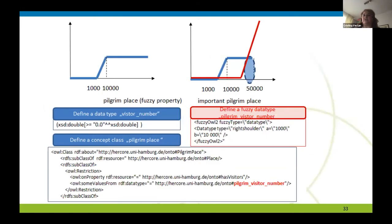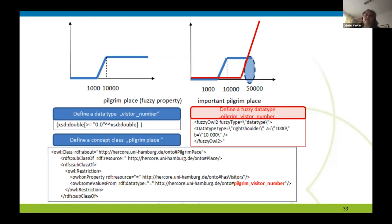On the next slide I show how we model a vague concept — a pilgrim place — which is dependent on sources and information about the number of visitors to a certain place. You see that the representation behind is a kind of OWL in XML format. For a humanist researcher, to write this down is quite difficult. So it would be nice to have a graphical tool where you click something and it generates the code behind.